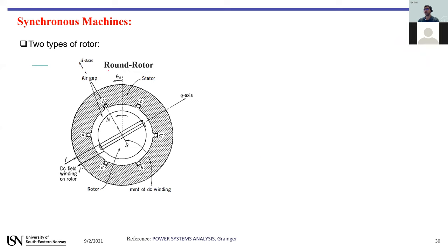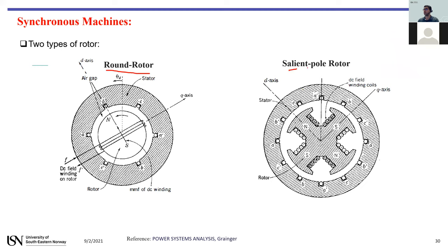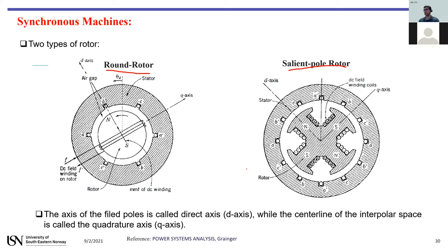There are two types of rotors. One is called the round rotor — the rotor is round without any salient poles. The other type is the salient pole rotor, which has visible salient poles.